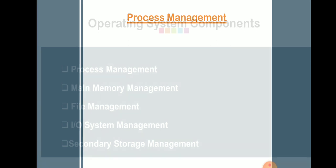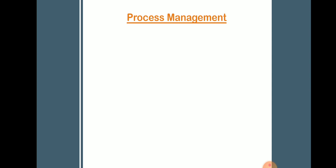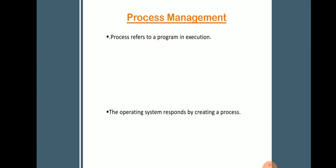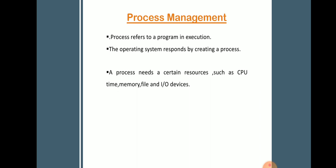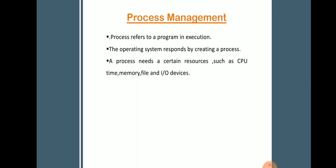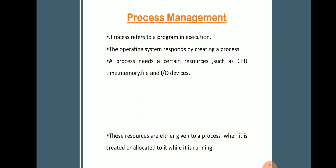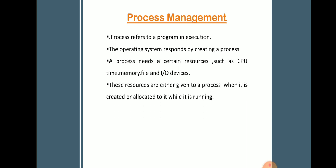First, we discuss Process Management. A process is a runtime entity — it refers to a program in execution. The process abstraction is a fundamental operating system mechanism for the management of concurrent program execution. The operating system responds by creating a process. A process needs certain resources, which may include CPU time, memory, files, and input-output devices.